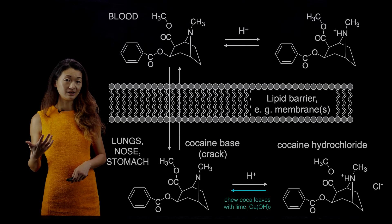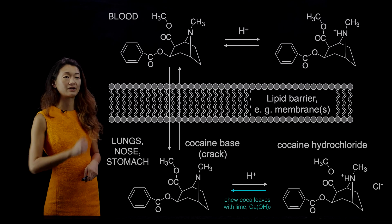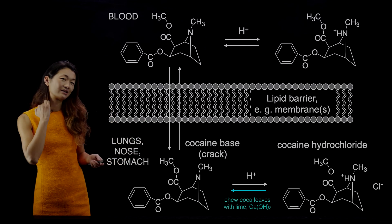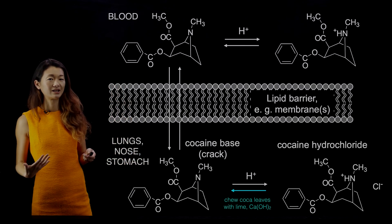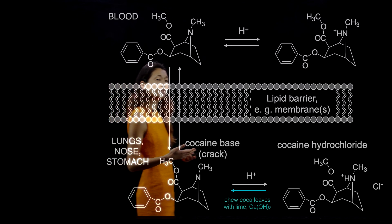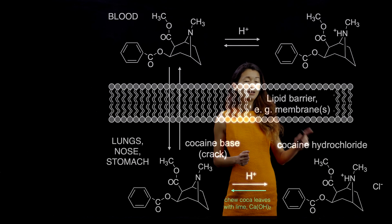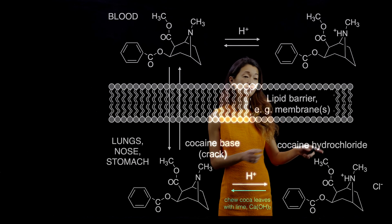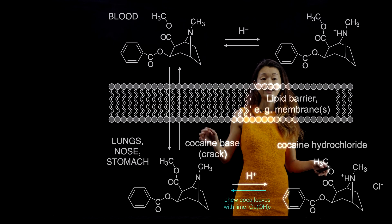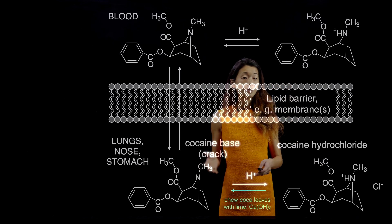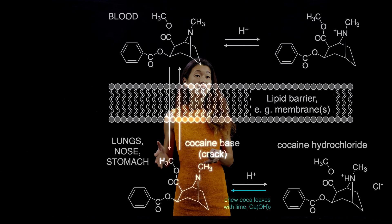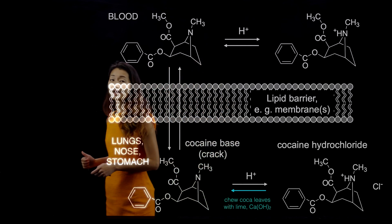For drugs to get into your blood, they have to cross what's called the stomach-to-blood barrier, which is a lipid membrane just like every other barrier in your body. Cocaine in its native form is actually a salt — cocaine hydrochloride. In order for cocaine hydrochloride, because it's a charged particle, to pass through the lipid barrier into your blood, it has to become a slightly different form. That is why chewing coca leaves with lime basically converts cocaine hydrochloride into cocaine base, otherwise known as crack cocaine.